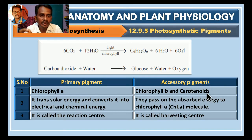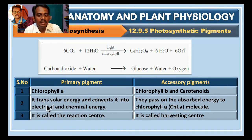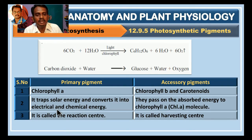Chlorophyll B and carotenoids are accessory pigments. The role of Chlorophyll A is that it attracts solar energy and converts it into electrical and chemical energy.